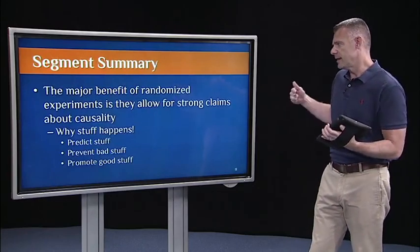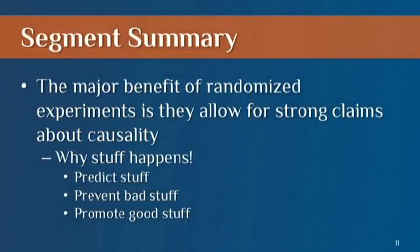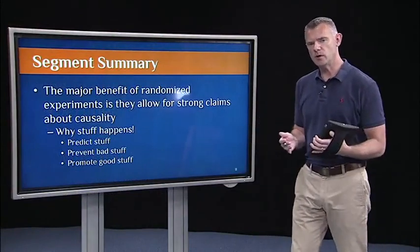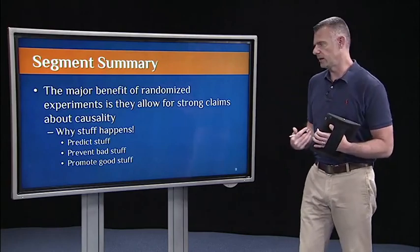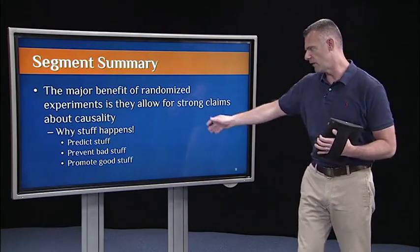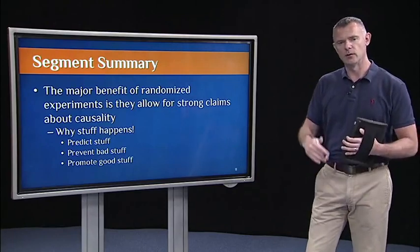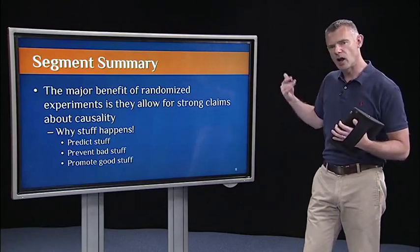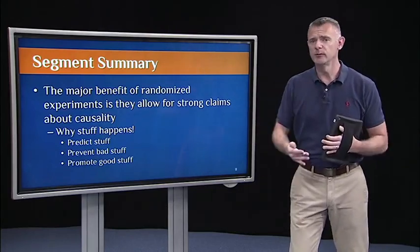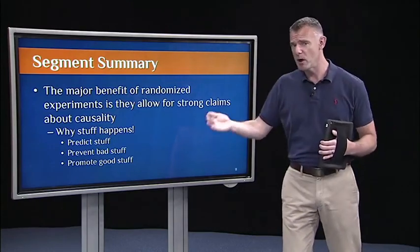So to summarize this segment, the major benefit of experimental research is that experiments allow for strong claims about causality — so why does stuff happen? Salk thought he had a vaccine that could prevent polio, and sure enough, if he gave the vaccination to enough children, they were able to prevent the bad stuff from happening. Experiments allow us to make causal claims about why stuff happens, which means we can predict stuff, which means we can prevent bad stuff and promote good stuff.